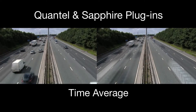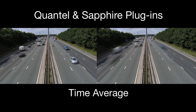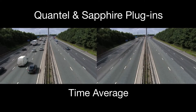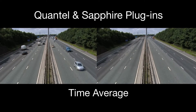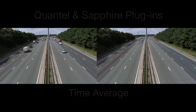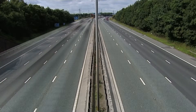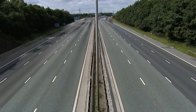In this exercise we're going to have a look at how to use the Sapphire Time Average plugin. Time Average interpolates frames to generate a blended trails effect. It's most effective when using locked-off shots of quickly moving traffic or crowds.